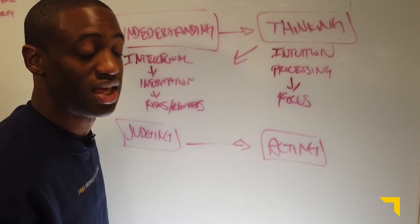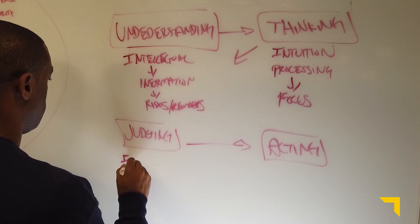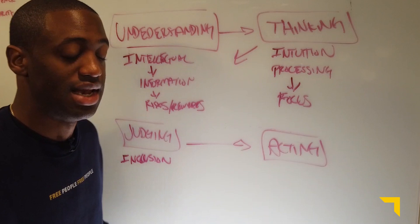But judgment is about this word. Notice we've been using I's. So we've got intellect for understanding, intuition for thinking. And now for judgment, we're going to use inclusion. Most people forget the beauty of inclusion. Now, inclusion is not just other people.